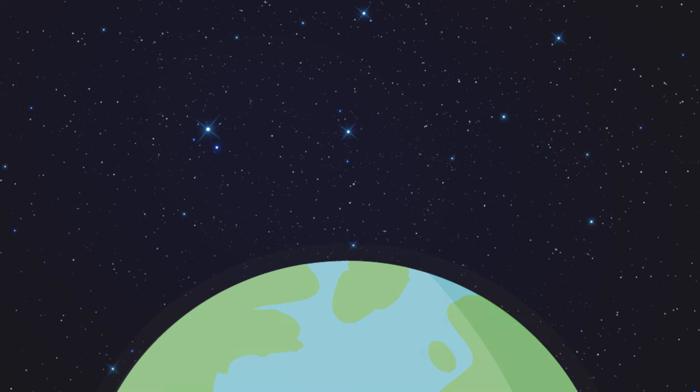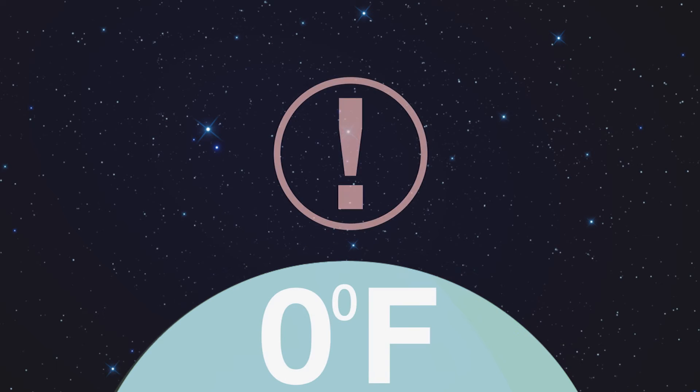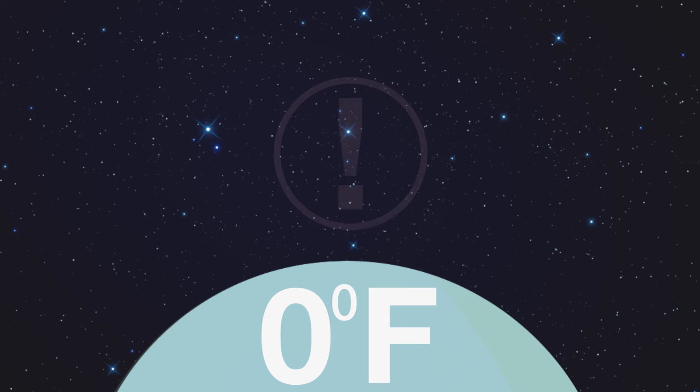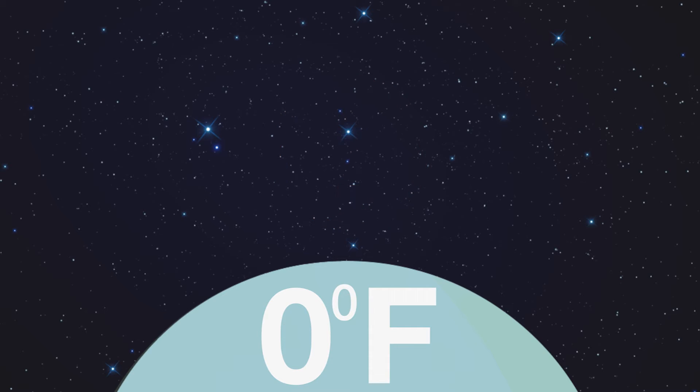With no gases in the atmosphere, the Earth's surface temperature would be about zero degrees Fahrenheit, and probably couldn't support any life. Luckily, the Earth does have an atmosphere, so let's consider the energy balance of just the Earth and the atmosphere.